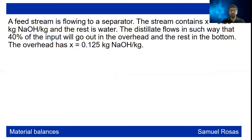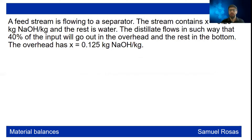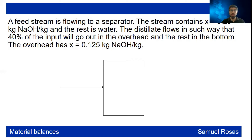Consider this process: a feed stream flows into a separator. The stream has a composition of 0.20 kilograms of sodium hydroxide (NaOH) and the rest is water (0.80). The distillate flows such that 40 percent of the input will go out in the overhead and the rest at the bottom. The overhead has a composition of 0.125 kilograms of NaOH. The first thing to do is draw the unit operation as a block with one inlet stream (0.20 NaOH, 0.80 water) — these must sum to one.